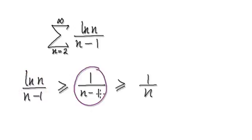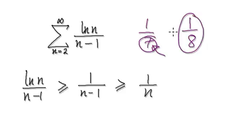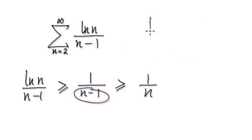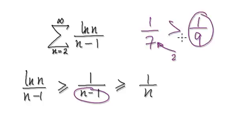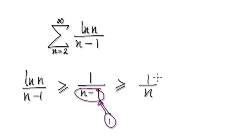Now let's look at the denominator. For example, if you have one over seven and you add something to the denominator — say you add two — then the new fraction will be smaller or equal to the original. So looking at the denominator here, I'm going to add an extra one into it. If you're adding something to the denominator, then this thing must be smaller or equal to the original expression.